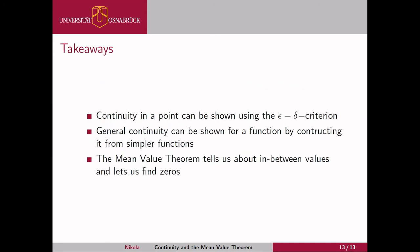We went through continuity and the mean value theorem. The main takeaways: the epsilon-delta criterion for defining continuity; the fact that general continuity is difficult to prove but can be built up from simple functions — like the identity — and then combining them via concatenation or multiplication to get more complicated functions that are also continuous; and the mean value theorem, which tells us about in-between values for continuous functions and helps identify zeros when we have no arithmetic way of calculating them.